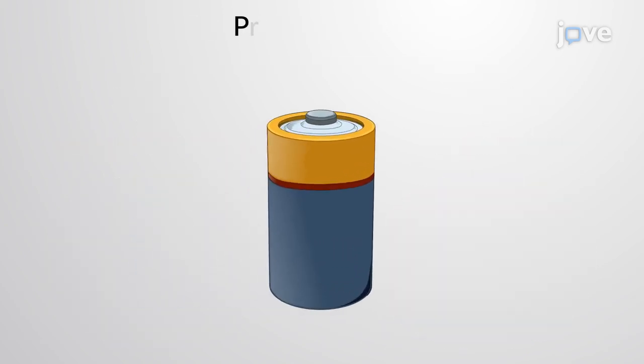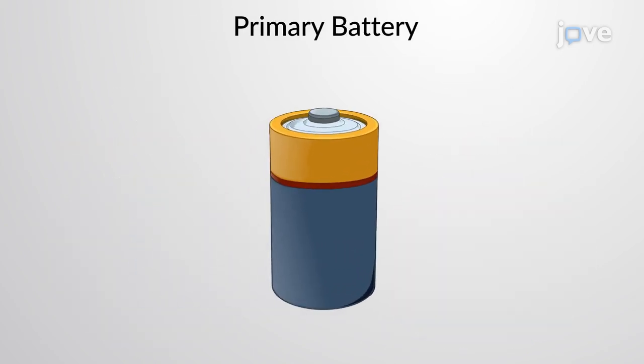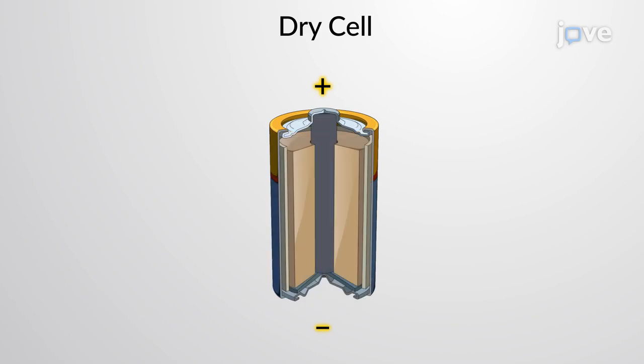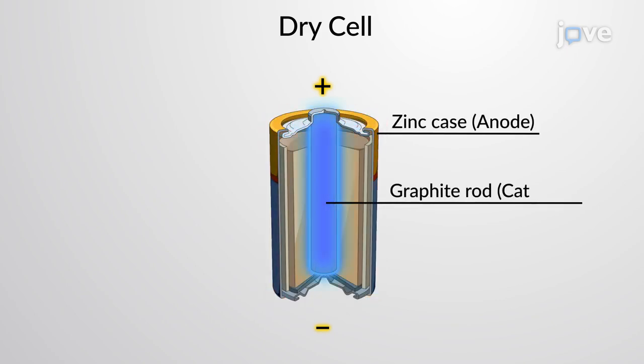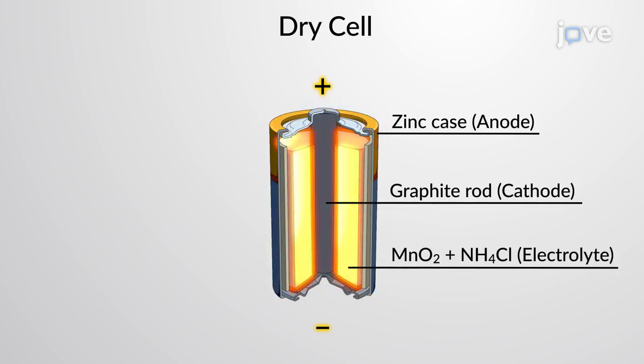The common primary battery is the dry cell. It contains a zinc case as the anode and a graphite cathode immersed in a moist acidic electrolyte.